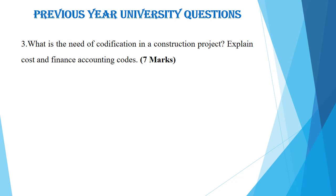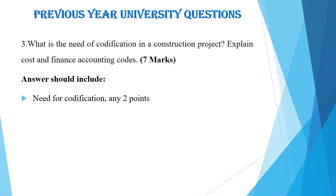The next question is: what is the need of codification in a construction project? Explain the cost and finance accounting codes, asked for seven marks. This question has two parts. The first part asks what is the need for codification in a construction project — mention at least two important points, more points are better for marks. The second part requires you to briefly explain cost codes and finance accounting codes: what they are, their importance, and their features.